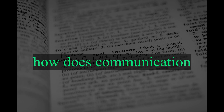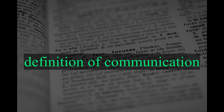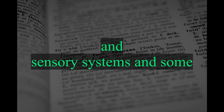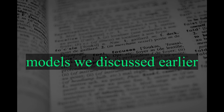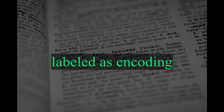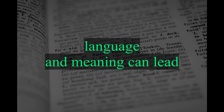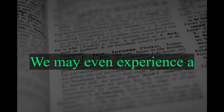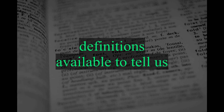So with all this possibility, how does communication generate meaning? You'll recall that generating meaning was a central part of the definition of communication we learned earlier. We arrive at meaning through the interaction between our nervous and sensory systems and some stimulus outside of them. It is here, between what the communication models labeled as encoding and decoding, that meaning is generated as sensory information is interpreted. The indirect and sometimes complicated relationship between language and meaning can lead to confusion, frustration, or even humor. We may even experience a little of all three when we stop to think about how there are some 25 definitions available to tell us the meaning of the word meaning.